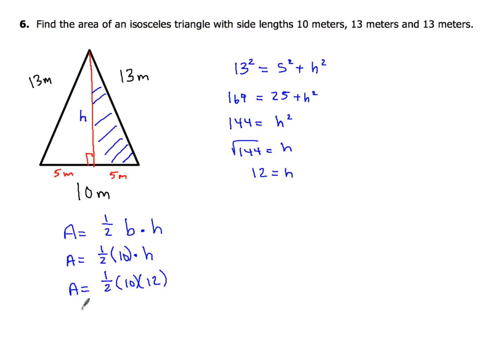So my area is going to be one half of 10 times 12. Now I kind of like to do this piece mentally because half of 12 is going to be 6. 6 times 10 is 60. So that's just going to be 60. I could also do half of 10 is 5, and then 5 times 12 is 60. Either way you do that, you end up with 60.